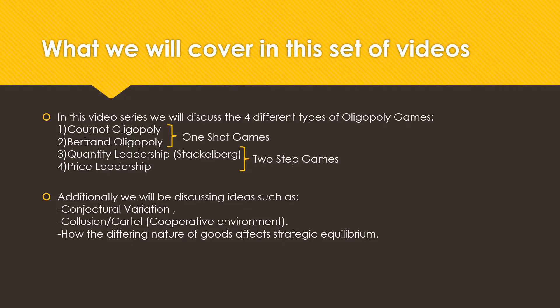In this video series, we will be discussing four different types of oligopoly games: Cournot oligopoly, Bertrand oligopoly, quantity leadership — which is also referred to as the Stackelberg model — and price leadership. The first two are what we call one-shot games, which are a static model, and three and four are two-step games.